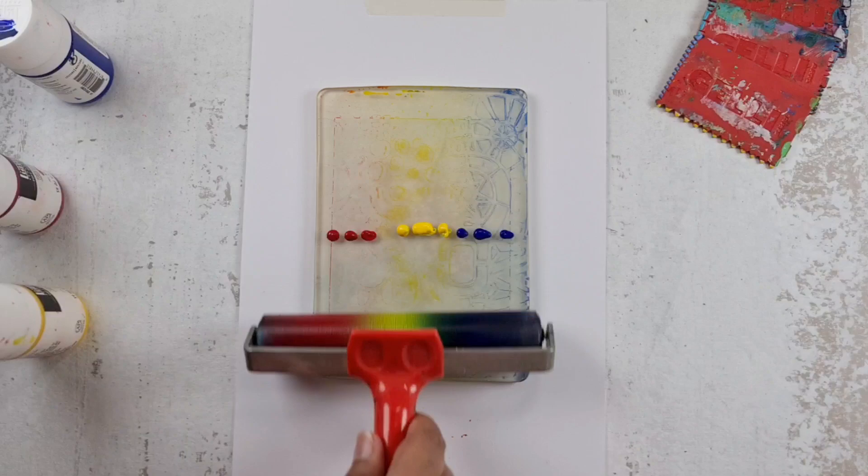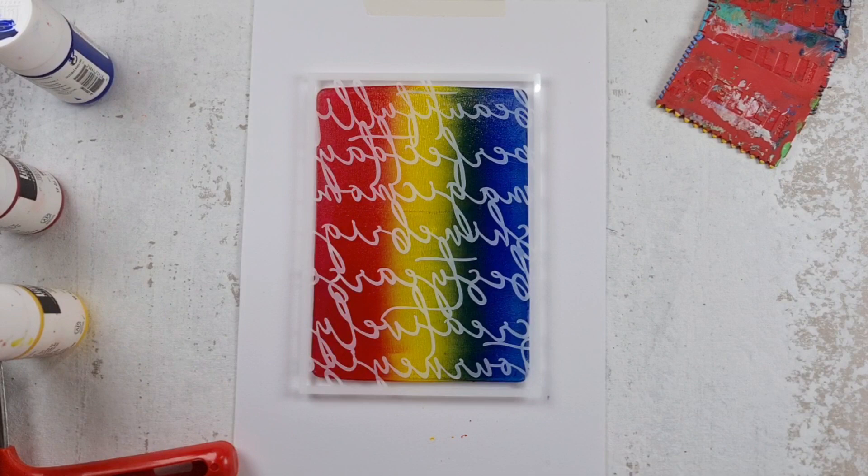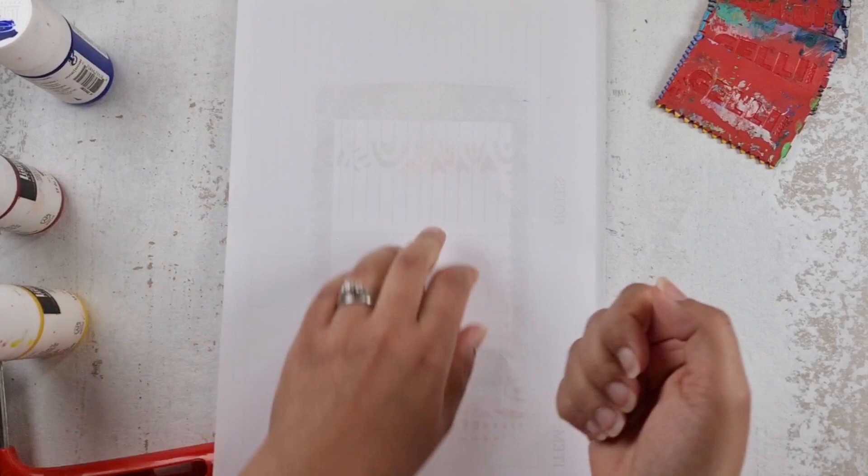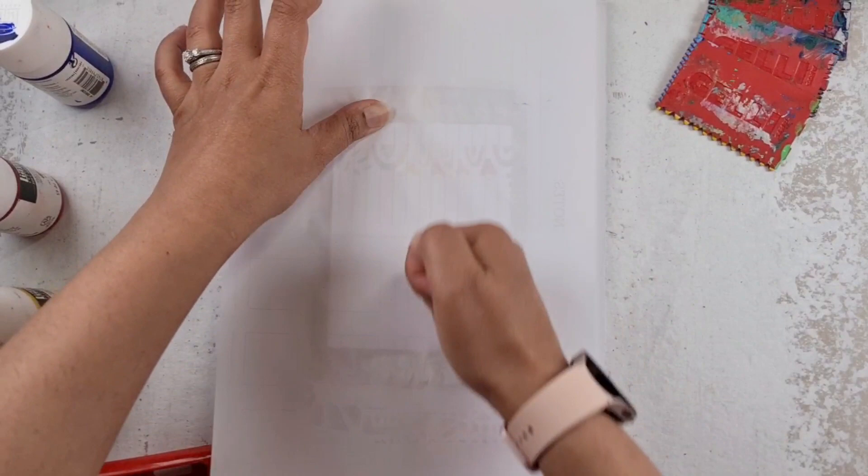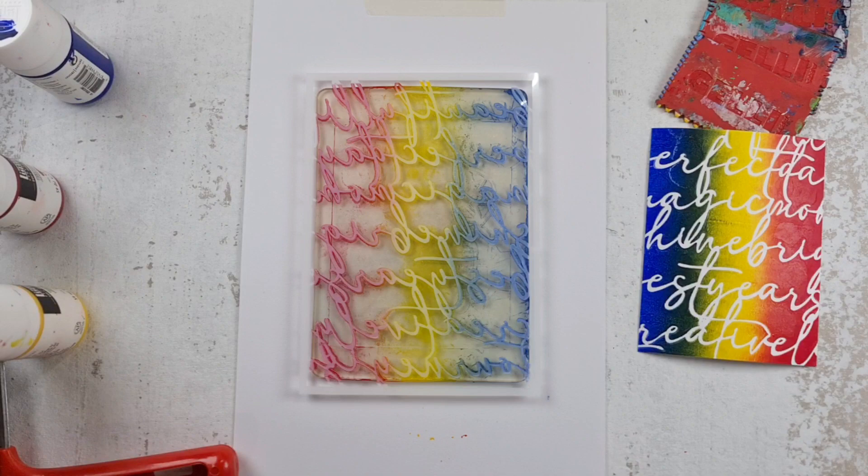So secondly, what I'm doing with my second design, I'm using stencils by Geliots as well. These are their latest designs. And I've got a script stencil down. Now, the important thing to note with script or any kind of text is you have to put them on backwards. So I've put them face down onto the gel plate and then it will print the right way up. It'll show up when I pull the paper off. So I'm using thick cardstock here and there is that really gorgeous rainbow background with the script stencil.